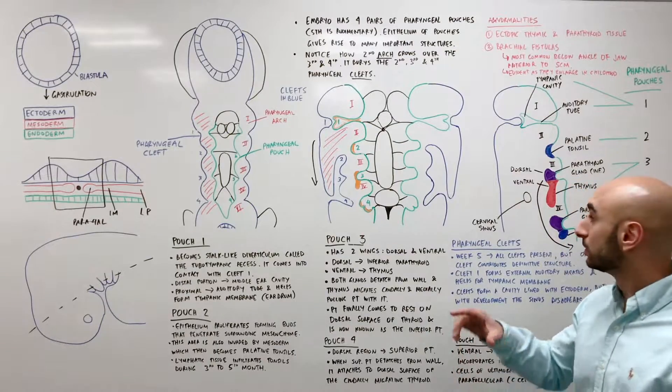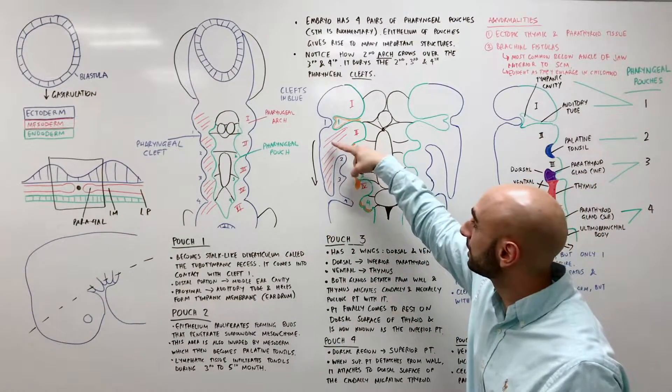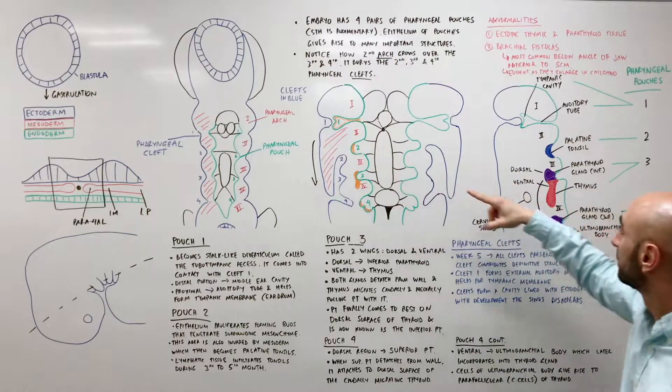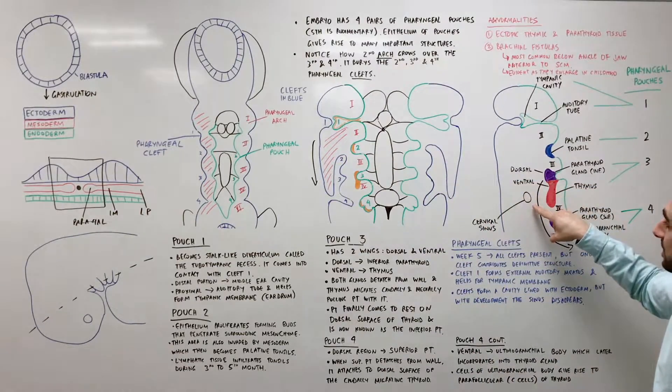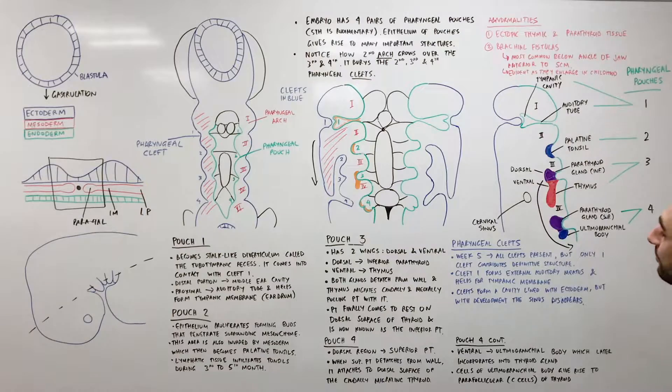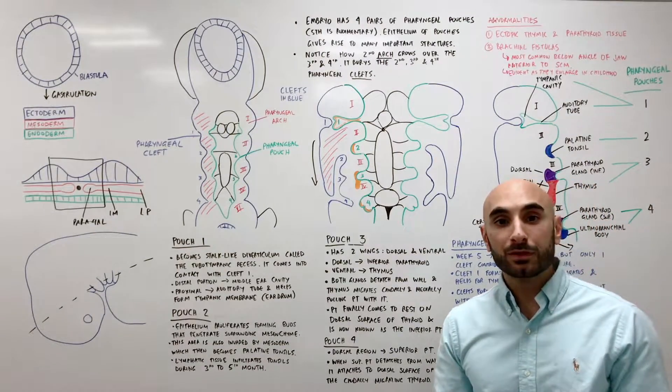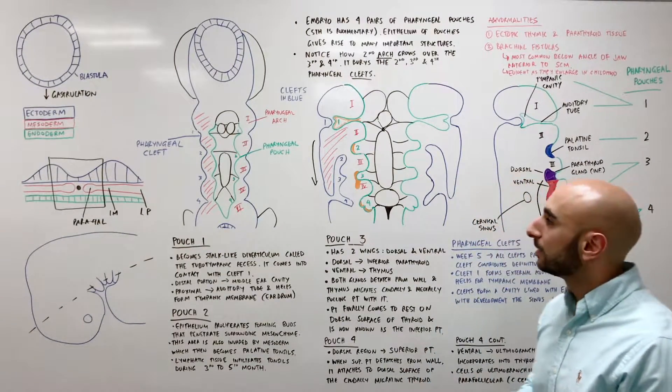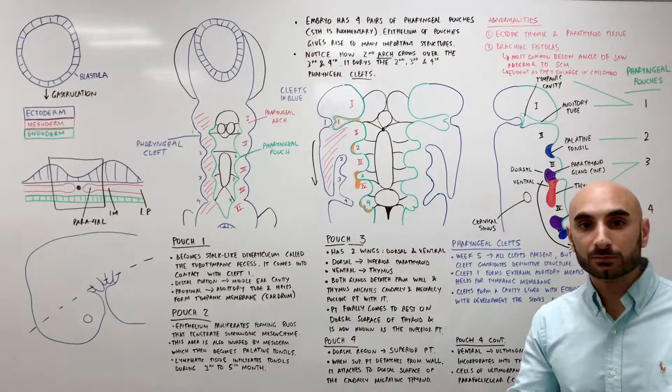And so, what happens in that situation is that this process isn't complete. So that this doesn't happen or this continues on. Another abnormal thing that could happen, or it could still be normal, but it's a normal variant, is that you have ectopic parathyroid tissue.